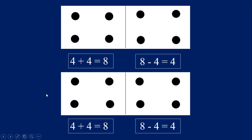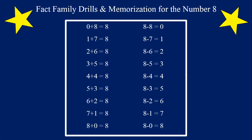Now let's practice the addition and subtraction problems for the number eight again, just to help you get these math facts memorized. We're going to say the addition first and then the subtraction. Say these with me please. Zero plus eight equals eight. One plus seven equals eight. Two plus six equals eight. Three plus five equals eight. Four plus four equals eight. Five plus three equals eight. Six plus two equals eight. Seven plus one equals eight. Eight plus zero equals eight. Good job!